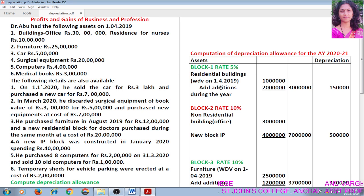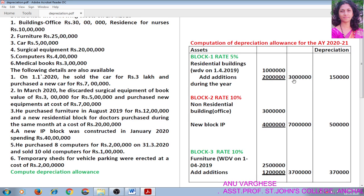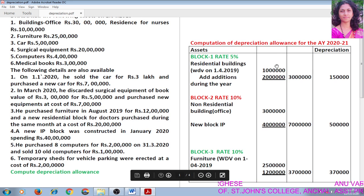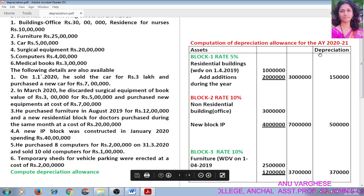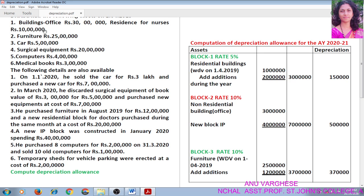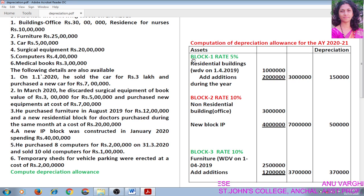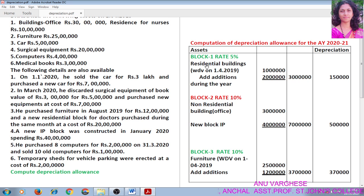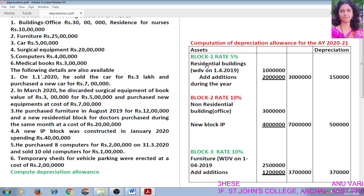Now let us start doing the problem. First, you have to write: computation of depreciation allowance for the assessment year 2020-21. Then draw a table with 3 amount columns, where the last amount column should be for depreciation. First of all, we have to categorize these assets into different blocks of assets. So first write Block 1. You have to study the rate of depreciation for each asset.